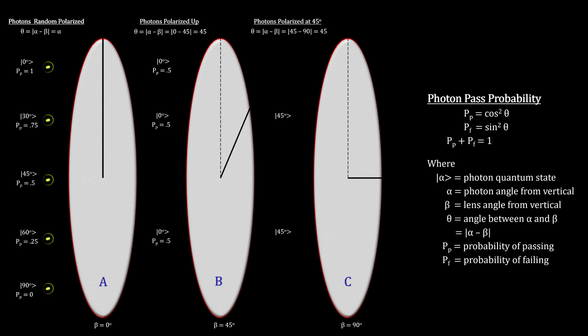Now we introduce lens B, which is rotated 45 degrees from vertical. We see that some of the vertically polarized photons coming through lens A will pass through lens B. In addition, the interaction between the photons and lens B change the photon's quantum state to oriented at 45 degrees to match the lens. This enables some of the photons that pass through lens B to now pass through lens C.